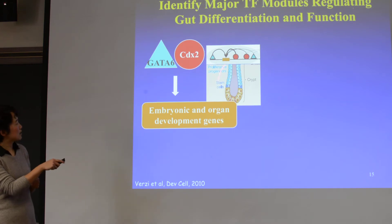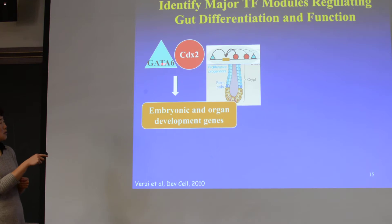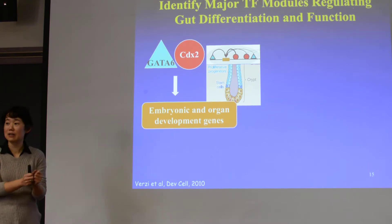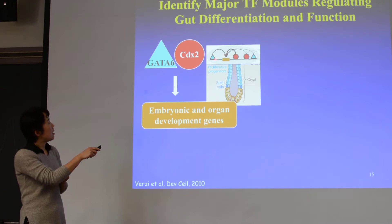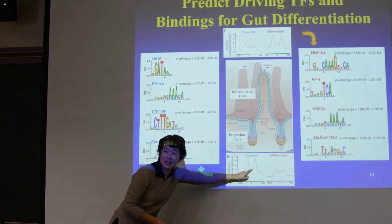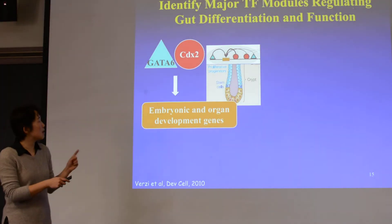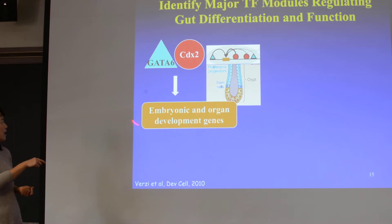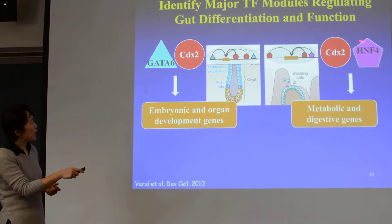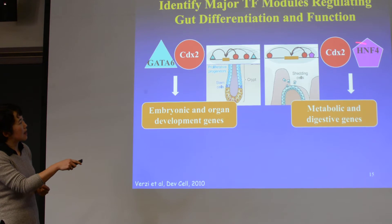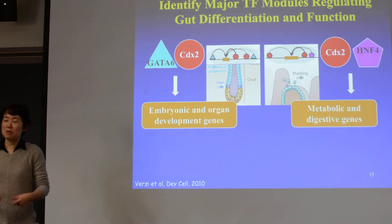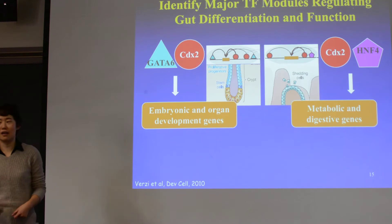In the stem cell or progenitor cell compartment, these two transcription factors - because GATA6 is also high in the stem cell compartment - when they interact together, they have a better way of going to the binding site, and they will go to a lot of these binding regions in the progenitors. If you look at their nearby genes and do gene ontology of their target genes, you can see they are related to embryonic organ development - more like stem cell-like functions. But in the differentiated cells, suddenly this transcription factor gets partnered differently, and if you look at their nearby genes they are more related to metabolism, absorption, or gut and intestinal-type functions.